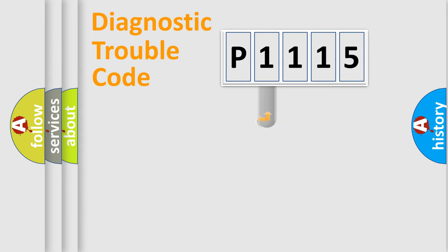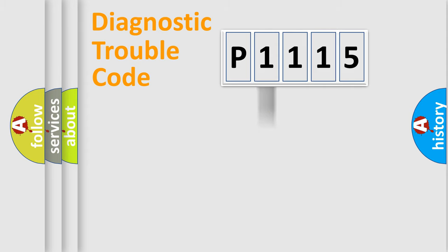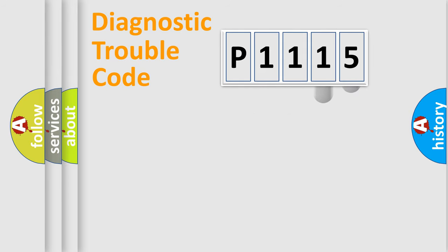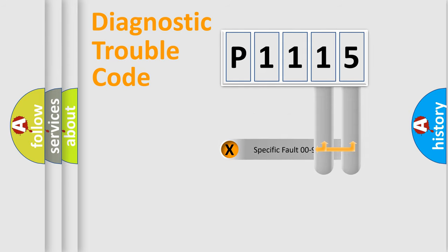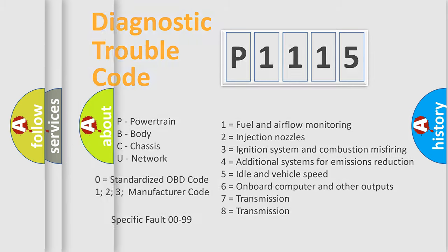This distribution is defined in the first character of the code. If the second character is expressed as zero, it is a standardized error. In the case of numbers 1, 2, or 3, it is a manufacturer-specific error expression. The third character specifies a subset of errors. The last two characters define the specific fault of the group. This division is valid only if the second character is zero.